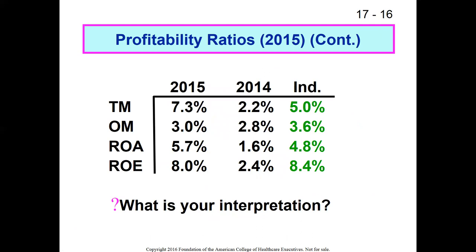Looking at a comparison table of four ratios — total margin (TM), operating margin (OM), ROA, and ROE — we have both trend analysis across time and comparison against industry averages. For total margin, assuming 5% is the industry average, this organization increased from 2.2 to 7.3, which is good. In 2014 they were doing worse than industry average; in 2015 they're doing better. Management should aim to stay above that 5% level going forward.